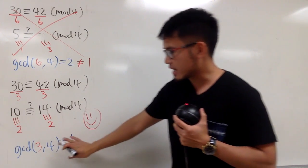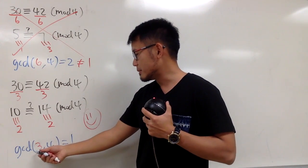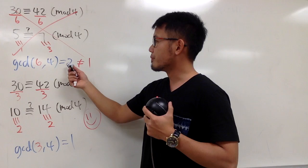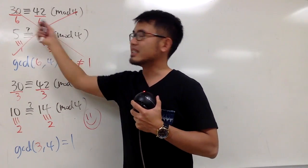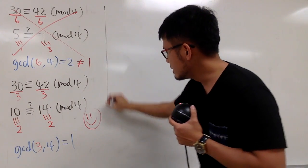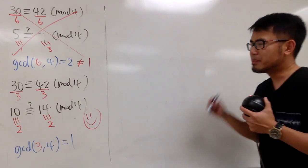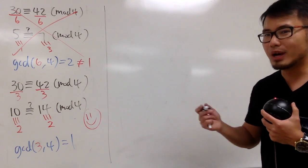So, this is what you have to check before you can actually divide. If the greatest common divisor is not equal to 1, just like this right here, we are not allowed to divide the 6 on both sides and still maintain the same congruency, which is no longer true. But anyway, we will have to go through a proof for this. So, let me write this down for you guys.